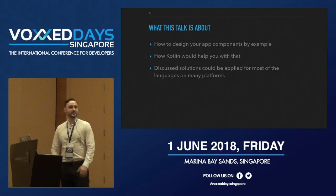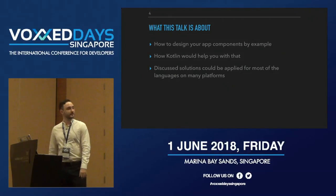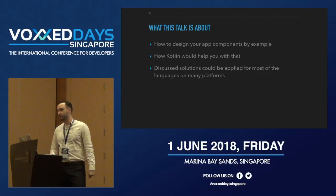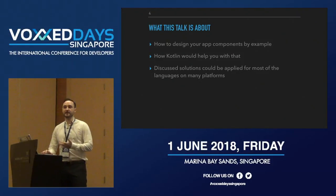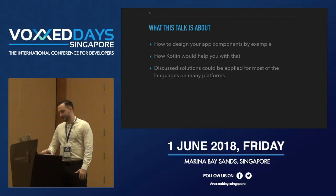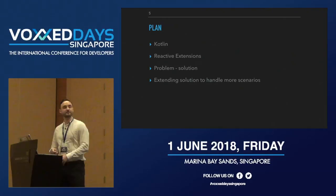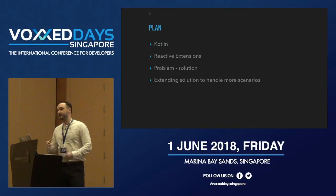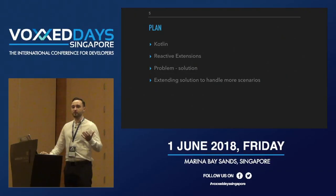This talk is about designing components based on a reactive library in Kotlin, and we'll see how Kotlin can help us design better APIs and be happier as developers. The solutions we discuss can be applied in many languages, so this knowledge could help you in day-to-day development even if you're not using Kotlin. The plan: first a bit about Kotlin, then reactive extensions, then typical problems and solutions.